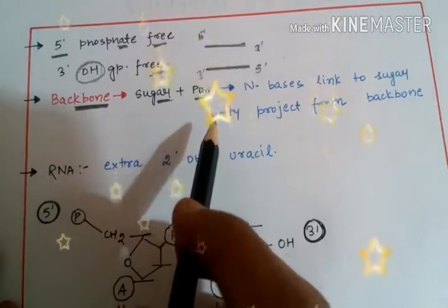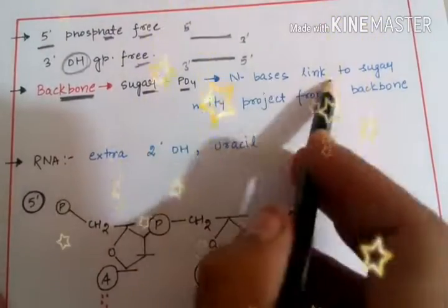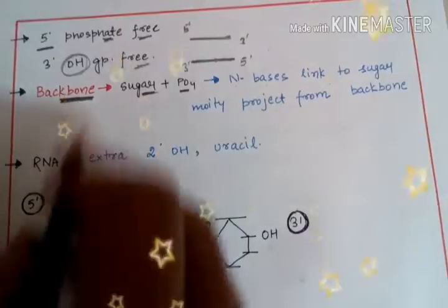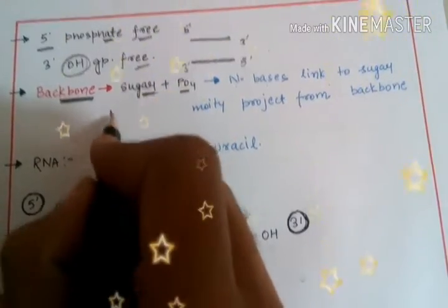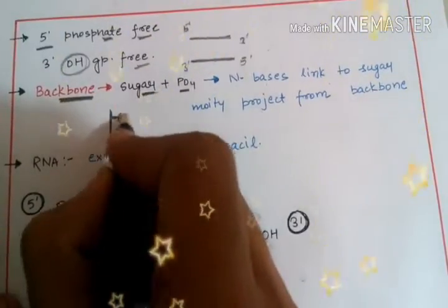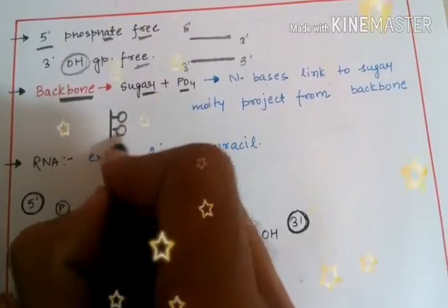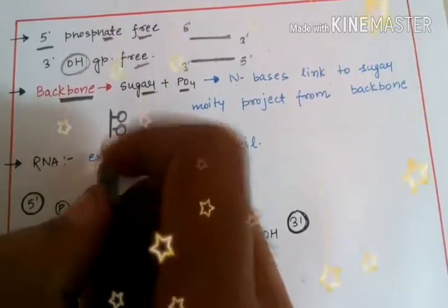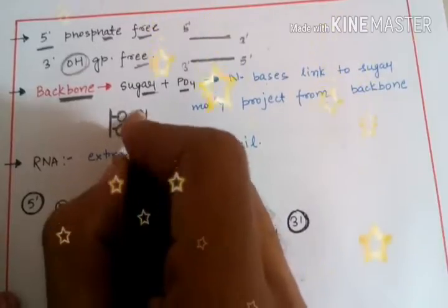And what is the role of nitrogenous bases? The nitrogenous bases linked to the sugar moiety project from the backbone. From this particular backbone of sugar and phosphate, the nitrogenous bases will project out. In most cases, the nitrogenous bases will project out inside.